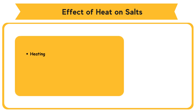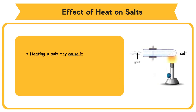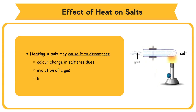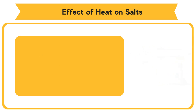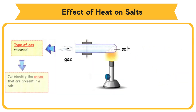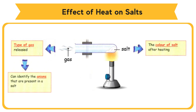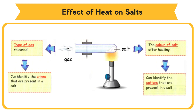Heating a salt may cause it to decompose. The decomposition may result in a color change in the salt residue, evolution of a gas, and liberation of water vapor. The type of gas released can identify the anions present. The color of the residue after heating can identify the cations that are present in a salt.